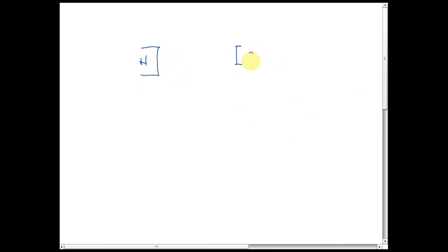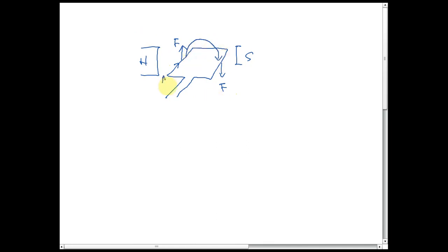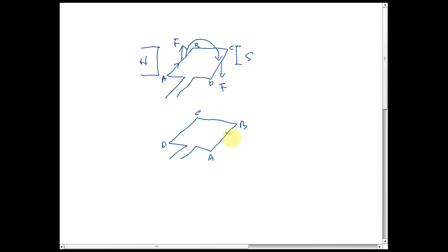Here is a north pole and here is a south pole, with a coil — current going in and coming out. When the current moves in, the force produced acts in this direction. Let's label the four sides of the coil A, B, C, and D. After the coil makes a half turn, A comes here, B comes here, D is here, and C is here.